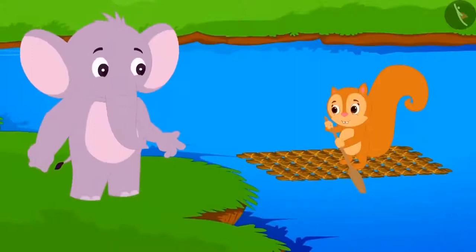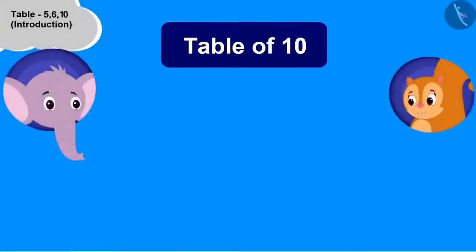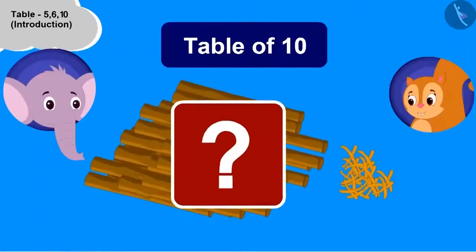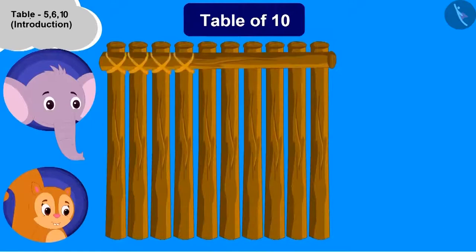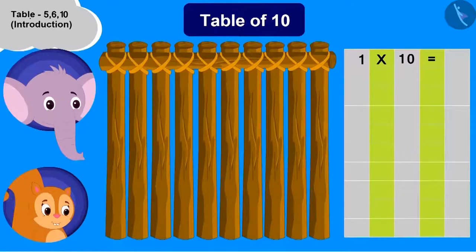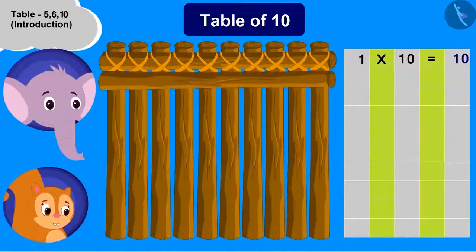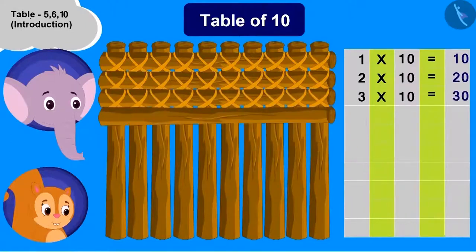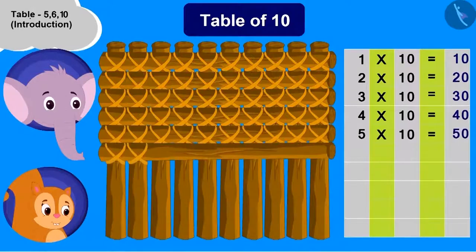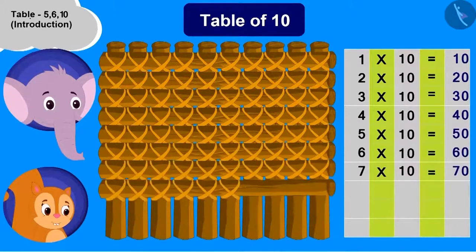Appu saw her sailing in her boat on the river. He asked Chanda to teach him to make the boat and the table of ten. To teach Appu the table of ten, how many sticks should Chanda use? Ten. Now what should we do to start? Place one wood horizontally. One multiplied with ten is ten. What should we do next? Add one more wood piece. Two multiplied with ten is twenty. Chanda added wood pieces and built the table of ten — and Appu's boat is ready.